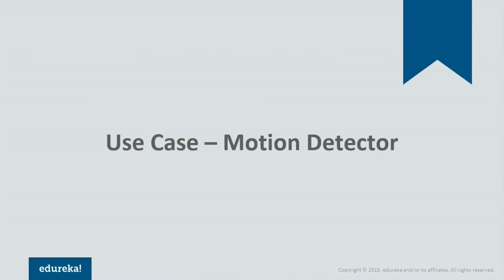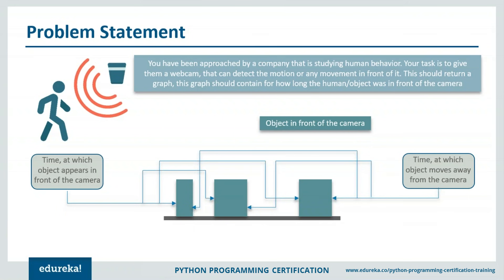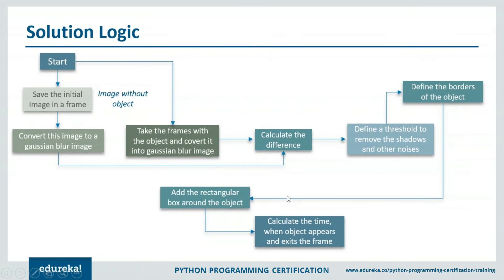Now we're going to talk about a motion detector — our main use case. You have been approached by an organization studying human behavior. Your task is to give them a camera that can detect any motion in front of it and return a graph showing for how long an object or human was in front of the camera. The graph should show the starting time when the object appeared, how long it stayed, when it went off, and when it appeared again — start time and end time of each appearance.